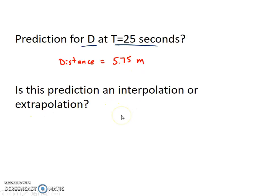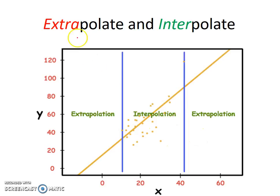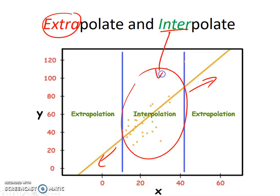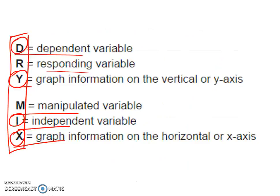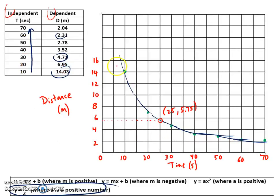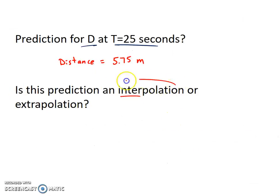Is this prediction an interpolation or an extrapolation? So let's remember, extra is outside of the data set. Here we only have data for this region. Inter is inside of our data set, so in between our last data point and our first data point. So is this an interpolation or an extrapolation? We're looking within our data set, within our first and last value, so this will be an interpolation.